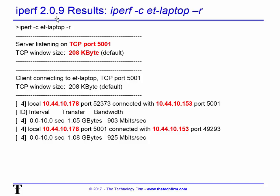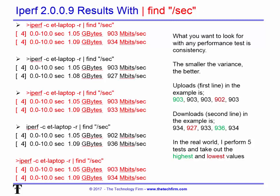With iPerf 2.09, running iPerf dash c with the server name and dash r for reverse, this is the default output: port number 5001 by default, window size by default, local IP address, remote IP address, and then the actual numbers — upload first, then download. I run these tests five times, drop the high, drop the low, and average the remaining three. That gives me a representative sample — you can do as many as you like.